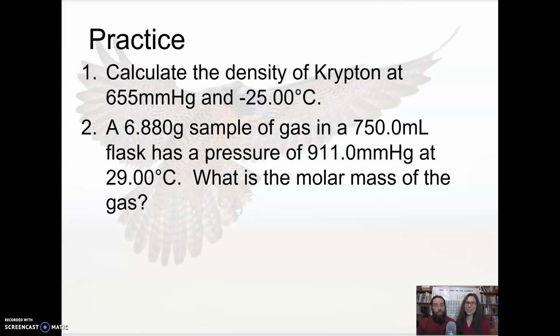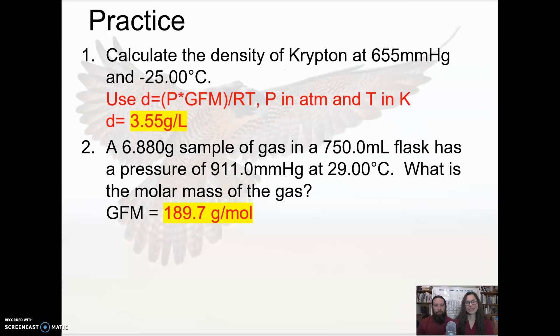So here's your practice. Pause the video and give these a try. Use the formulas that we created today. I got a couple of tips. Krypton is a noble gas. And a lot of the gases, like oxygen, nitrogen, it's diatomics. Krypton is not. This is just krypton. And notice that we have pressure in millimeters mercury and temperature is minus 25 degrees C. That's a minus. So we're going to have to convert that to Kelvin. We're going to have to convert the pressure to atmospheres. Looks like there's some conversions going on in question two as well. So pause the video and give these a try. See if you can calculate the density of krypton and find the molar mass of an unknown gas.